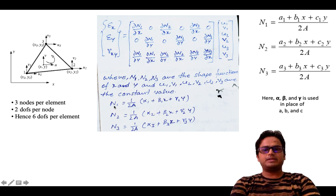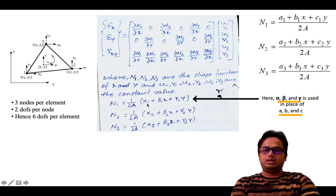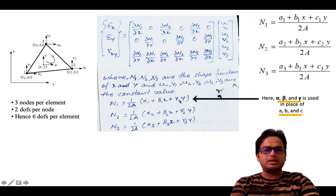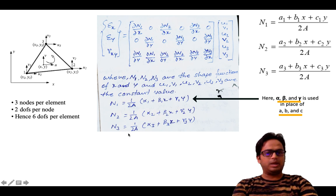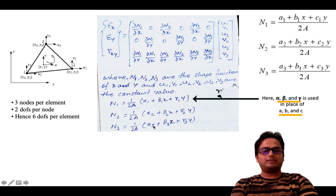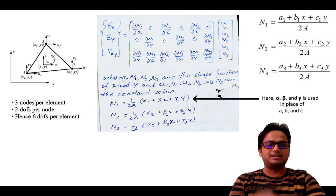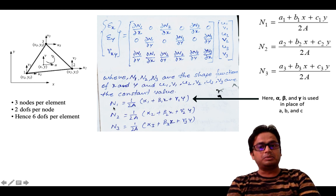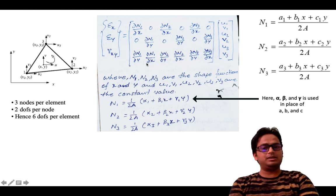We previously derived expressions for n1, n2 and n3, which are the shape functions of the constant strain triangle. Here A is the area of the triangle. We have: n1 = (1/2A)(α1 + β1·x + γ1·y), n2 = (1/2A)(α2 + β2·x + γ2·y), n3 = (1/2A)(α3 + β3·x + γ3·y). We now take partial derivatives with respect to x and y.